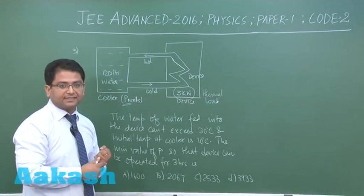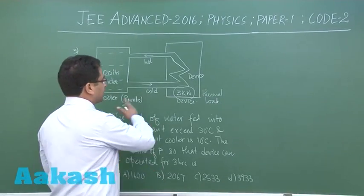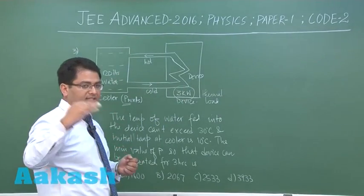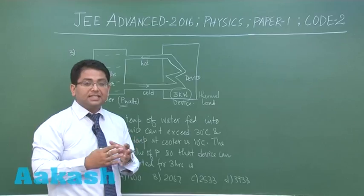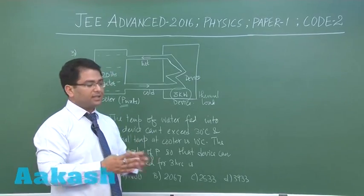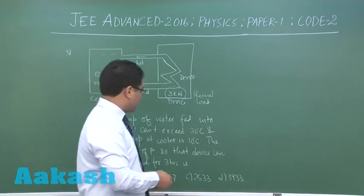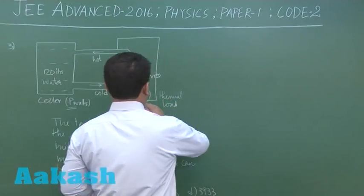After each cycle, the temperature of the water increases step by step. We need to calculate the time so that the temperature would not exceed 30 degrees. The solution is very straightforward. It would be something like this: